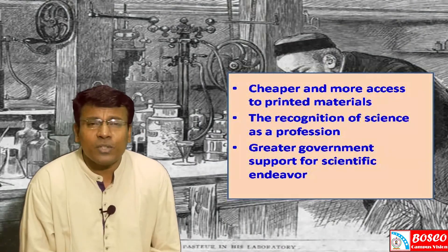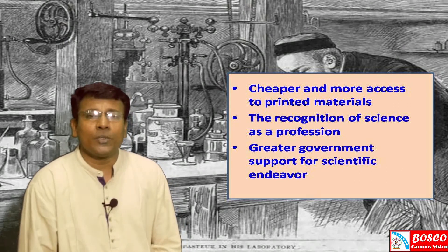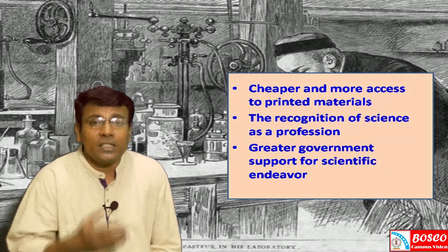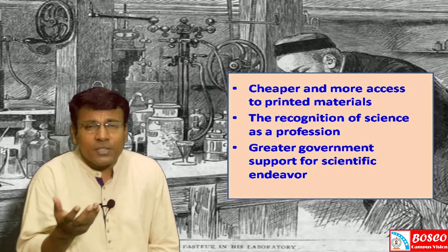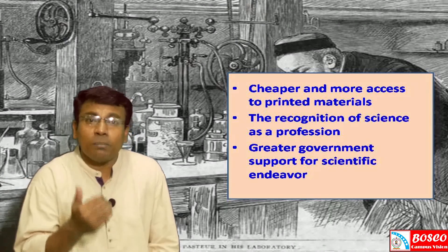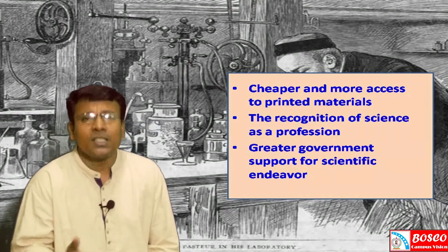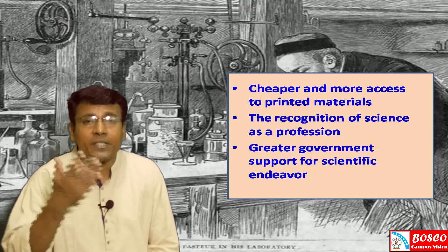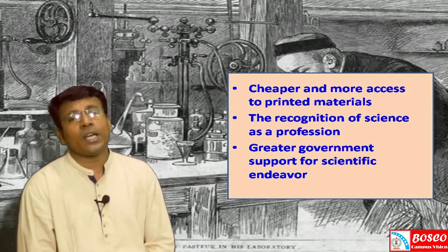We naturally ask: what were the reasons for the rapid growth and spread of science and technology during the Victorian era? The first factor was cheaper and more accessible printed materials. These cheap printed materials on scientific developments could easily propagate scientific knowledge to the common people at a very low cost.